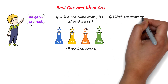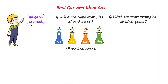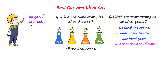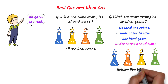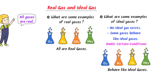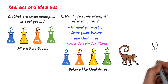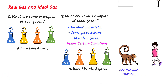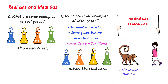Secondly, what are some examples of ideal gases? Well, no ideal gases exist in our daily life. But some gases behave like ideal gases under certain conditions. For example, under certain conditions, oxygen gas, nitrogen gas, hydrogen gas, and helium gas behave like ideal gases. For instance, a chimpanzee is not a human being, but any chimpanzee can behave like human beings. Similarly, no real gas is an ideal gas, but some real gases behave like ideal gases.